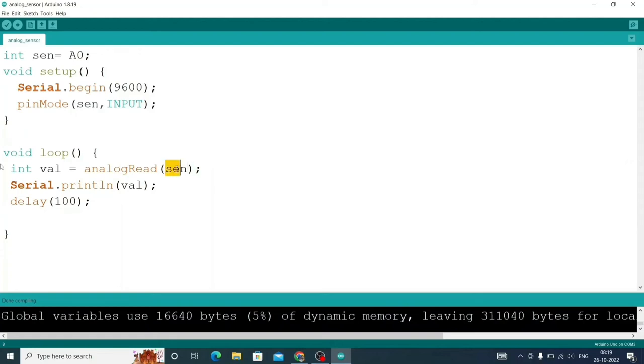And thereafter we are storing this value to one variable which name is val, that is int in data type. Thereafter we are printing that value by using serial.println function and in the parameter we are passing that variable name.